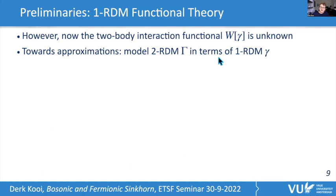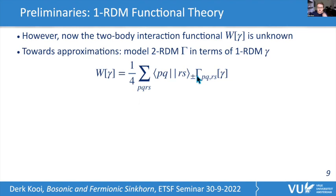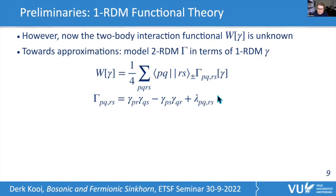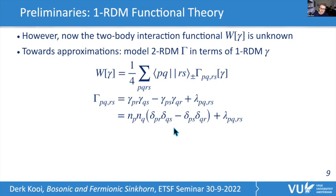The problem with using the 1-RDM instead of the 2-RDM is that we need an unknown two-body interaction functional W[γ]. It makes sense to model the 2-RDM in terms of the 1-RDM γ, contracting it with the two-particle integrals. A convenient decomposition of the 2-RDM is into a Hartree part, an exchange part, and a correlation part written in terms of the cumulant λ. In the natural orbital basis this reduces to Kronecker deltas for the Hartree and exchange parts.